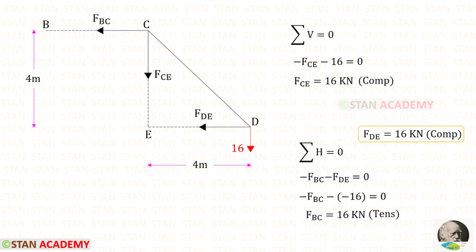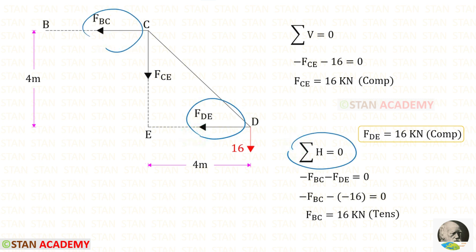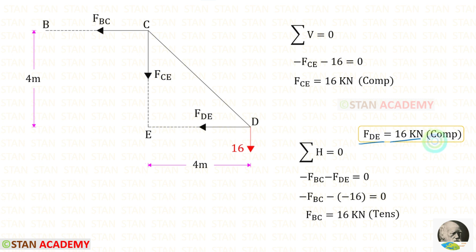Now let us apply sigma H equals 0. FBC and FDE are acting towards the left side, so both of them are negative. We know the value of FDE is 16 and it is compressive. Since it is compressive, we have to apply it as negative. Finally, for FBC, we will get 16 kilo Newtons and it is tensile.